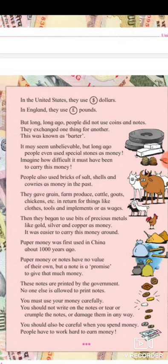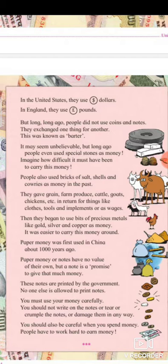But long, long ago, people did not use coins and notes. They exchanged one thing for another. This was known as barter. The barter system is nothing more than exchanging goods, food, and services without using money. You use goods, services, or property in exchange for other goods you want.